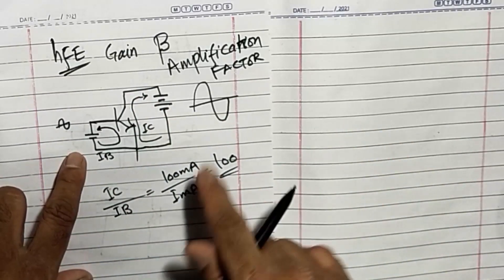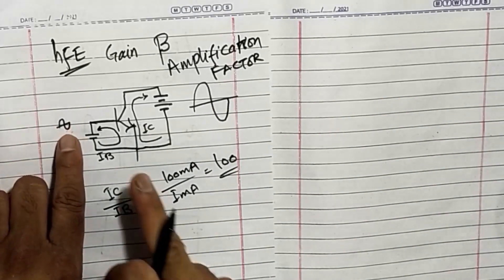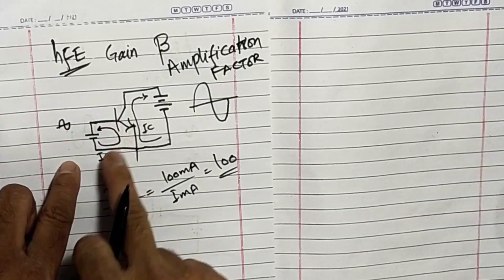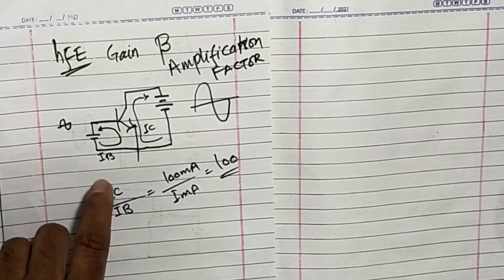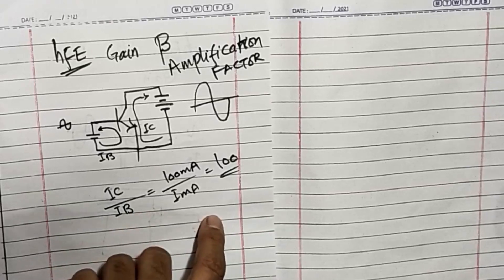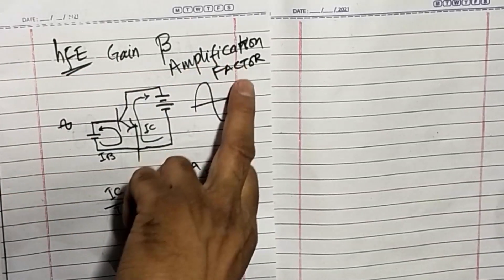Amplification factor will depend on the material and the type of the transistor. So the ratio between collector current and base current is called beta, gain, hFE, amplification factor.